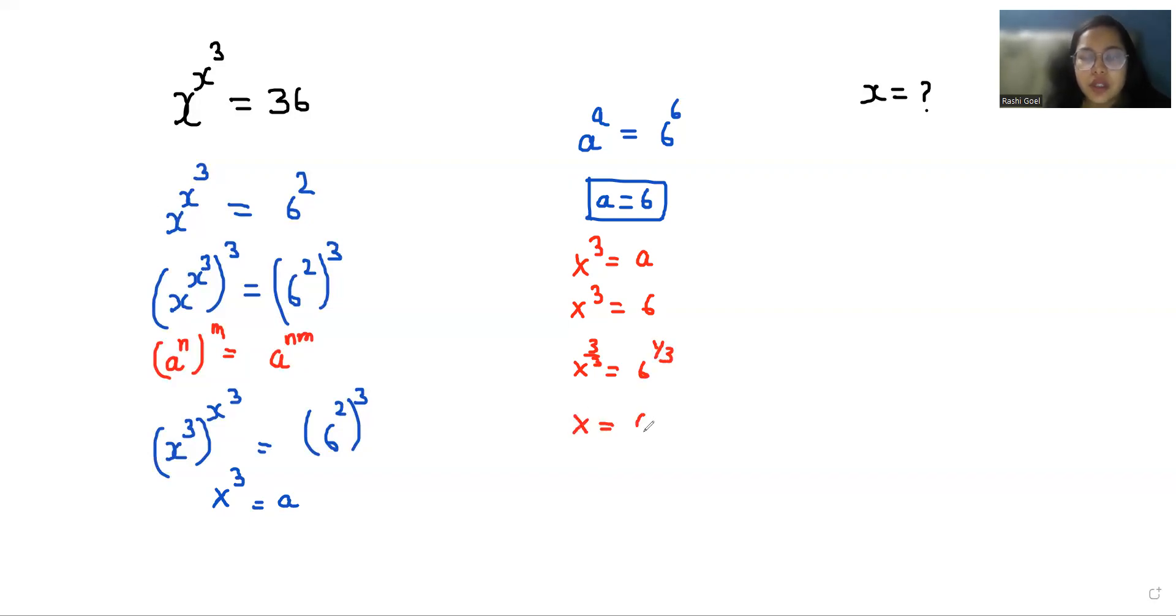So x = 6^(1/3) or cube root of 6. This is the final value of x.